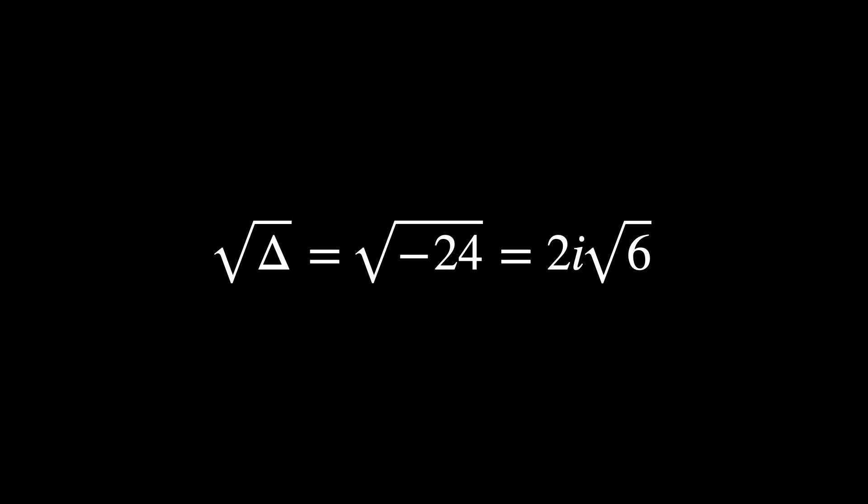The eigenvalues, then, would involve the term the square root of delta, which is equal to the square root of minus 24, which is a complex number. And therefore, the eigenvalues will not be real numbers.